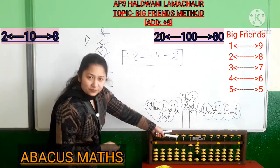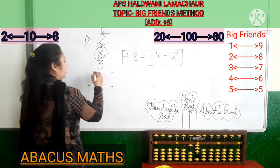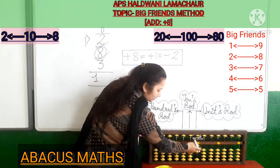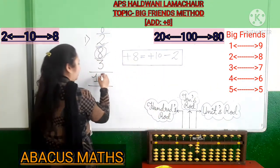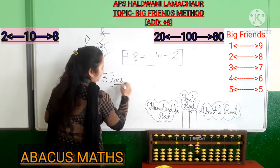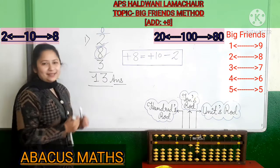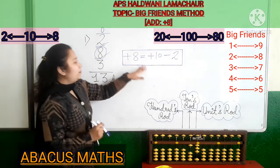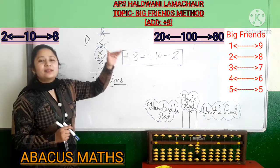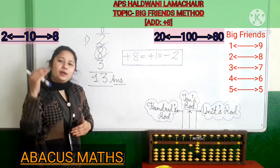Now you can see the answer. In the 10s slot it is 1, and in the 1s slot it is 1, 2, 3. So 13 is your answer. In this sum we used the formula plus 10 minus 2. Plus 10 we did in the 10s rod.